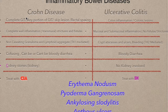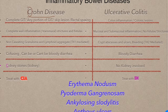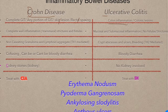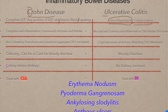Focus on the 'C' in Crohn's: Crohn's disease has complete GIT involvement — any portion of the GIT could be involved. It has skip lesions and rectal sparing. Ulcerative colitis, on the other hand, only involves the colon and only has colonic lesions.